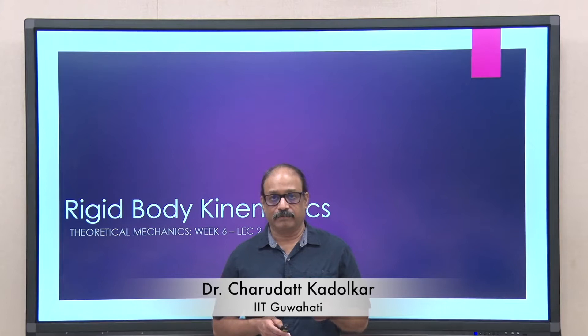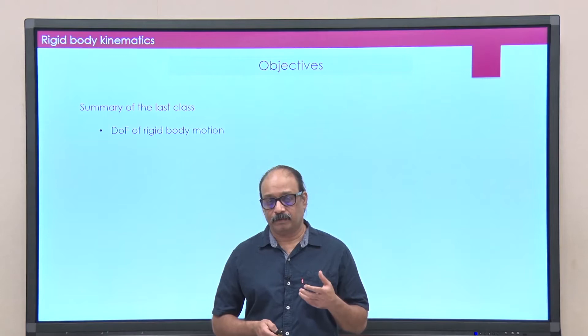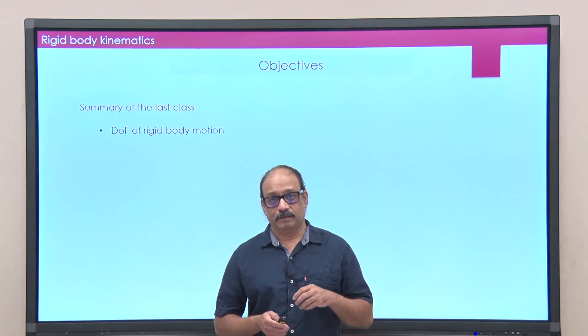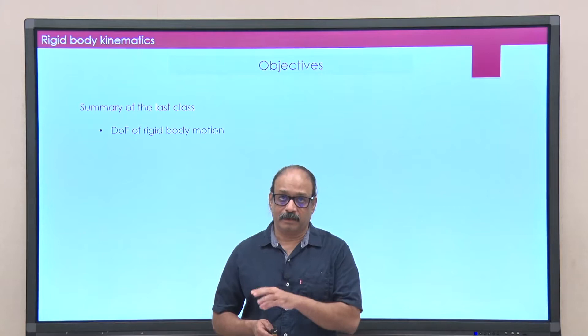Hello guys. In yesterday's class, we talked about the definition of rigid bodies and argued that the number of degrees of freedom to specify the motion of a rigid body is 6. It is crucial to understanding the motion of rigid bodies how these 6 degrees of freedom are assigned appropriate generalized coordinates.